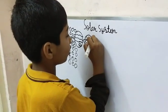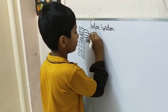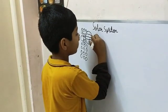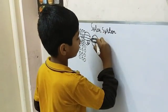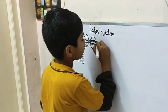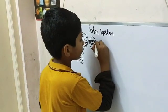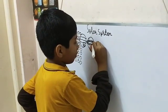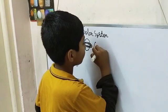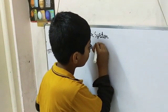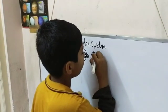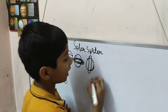This is the rock, this is Uranus, and it has a ring like this.